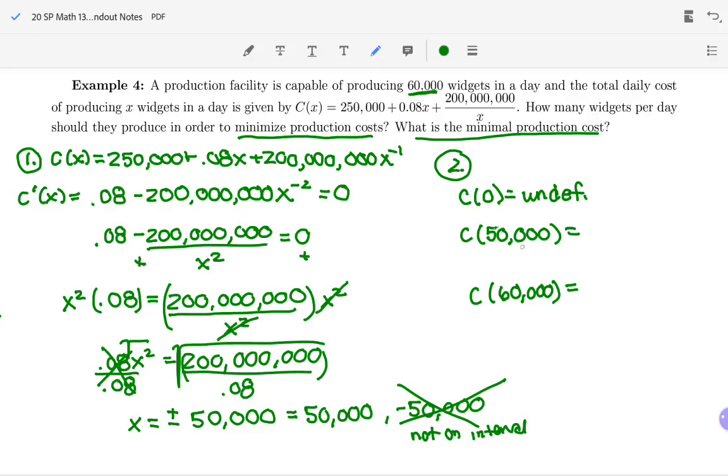So now let's plug in 50,000 into the original. 250,000 plus 0.08 times 50,000 plus 200 million divided by 50,000. And you probably need parentheses around this fraction here in order to plug it all in one step on your calculator. What you should get is $258,000 even. It's the daily cost when producing 50,000 widgets.